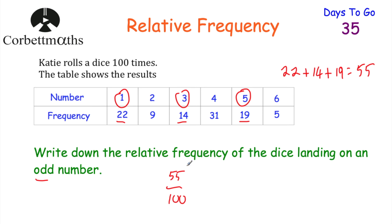Now if we want to, we could cancel this down. Both numbers are divisible by 5, and if we divide both by 5, we get 11/20. So the relative frequency of the dice landing on an odd number is 11/20 or 55/100. We just find out how many times it landed on an odd number — 55 times — out of the 100 times it was rolled.